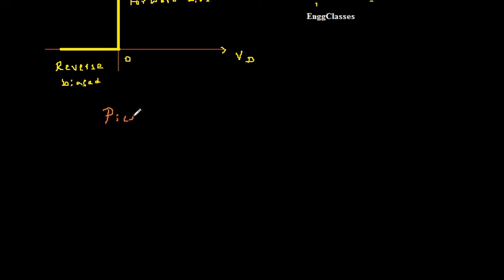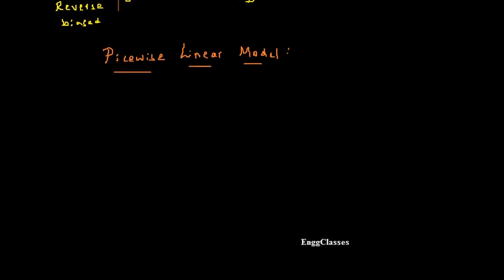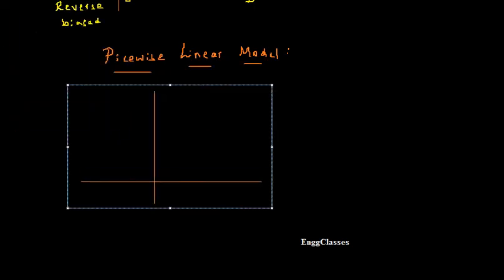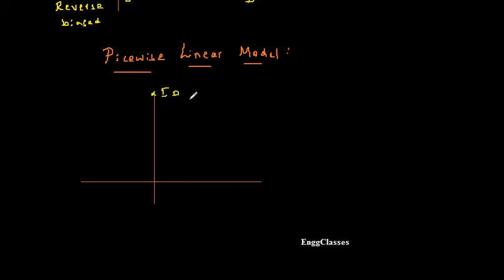Now let me consider the second one — the piecewise linear model. Again I need to draw its VI characteristics and the equivalent circuit. The y-axis is the current ID and the x-axis is the diode forward voltage Vd. The actual VI characteristics of a diode — the exponential curve — can be approximated with two pieces of straight lines, and since they are linear, hence the name piecewise linear model.